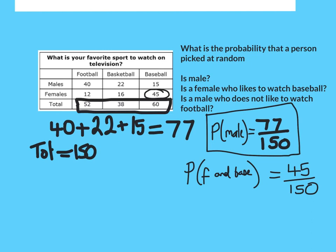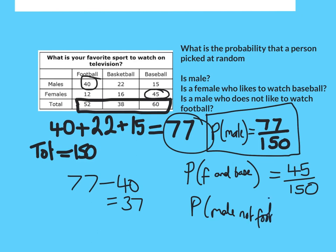And last of all, a male who does not like to watch football. We know there are 77 males and 40 of them do like to watch football, so that must mean that 77 take away 40 is 37 do not. So that would be probability of male not football would be 37 out of 150. I haven't put that as a worked example but feel free to write any notes of anything you're unsure of.